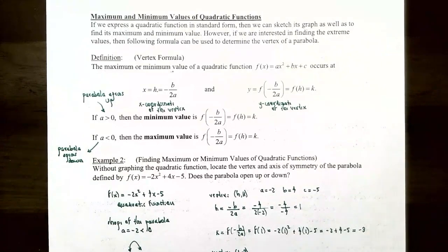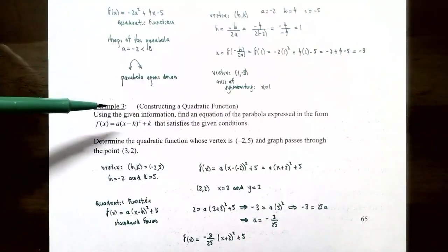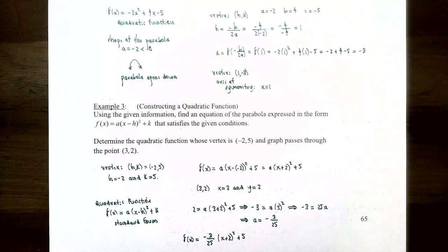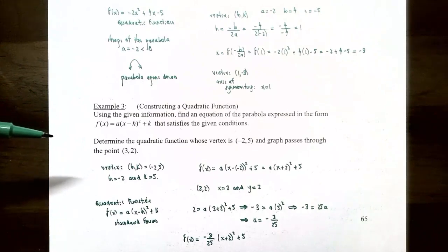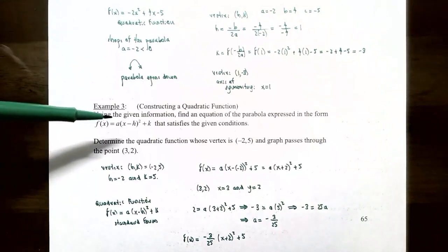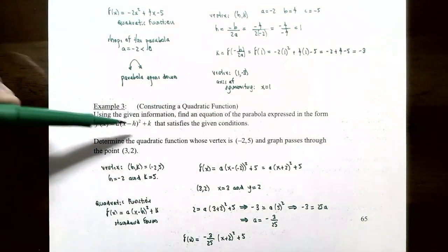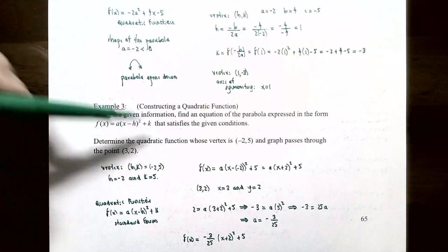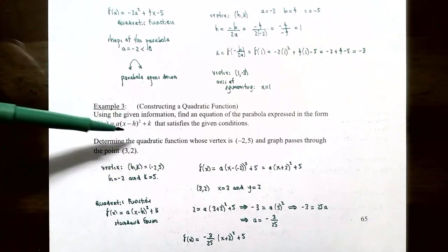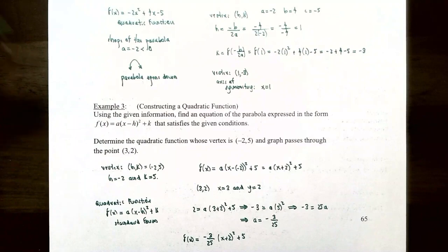Now in Example 3, we're going to construct a quadratic function. Up until this point we've been given a function and asked to find information about it. This time we're given information and have to find — actually construct — the quadratic function. Using the given information, find an equation of the parabola expressed in the form f(x) = a(x - h)² + k, which is standard form or vertex form, where the vertex is the point (h, k) and a determines the shape.